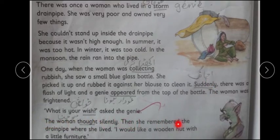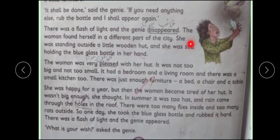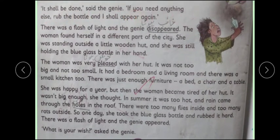The woman thought silently, then she remembered the drain pipe where she lived. I would like a wooden hut with a little furniture — usse na socha, mughe kya chahiye. Aap ne ye stories cartoons mein dekhi hogi genie wali — genie puchhta hai: mere liye kya hukam hai, ya kooi wish hai. It shall be done, said the genie. If you need anything else, rub the bottle and I shall appear again. There was a flash of light and the genie disappeared.